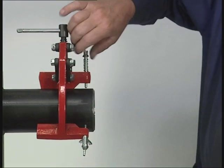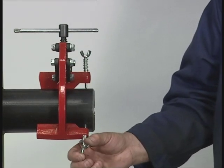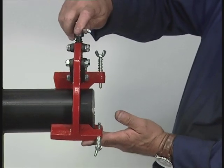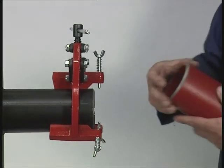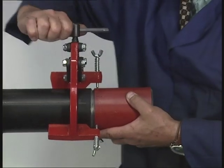The EasyFit pipe clamp range consists of four models, covering a range of half-inch to twelve and three-quarter inches outside diameter. They can also be used on stainless steel by fitting the optional stainless steel feet to prevent contamination of the pipe.